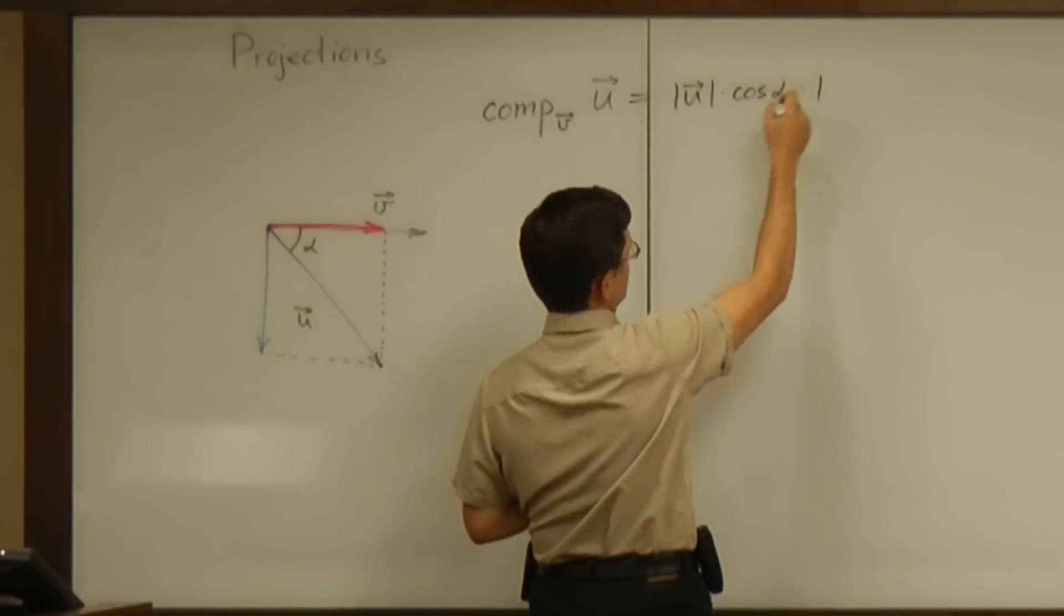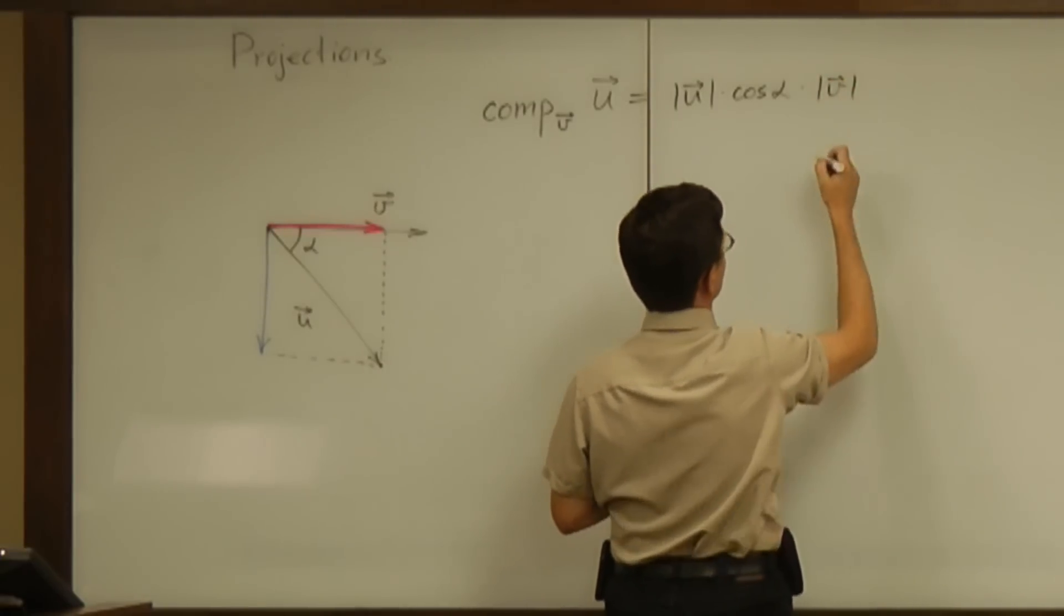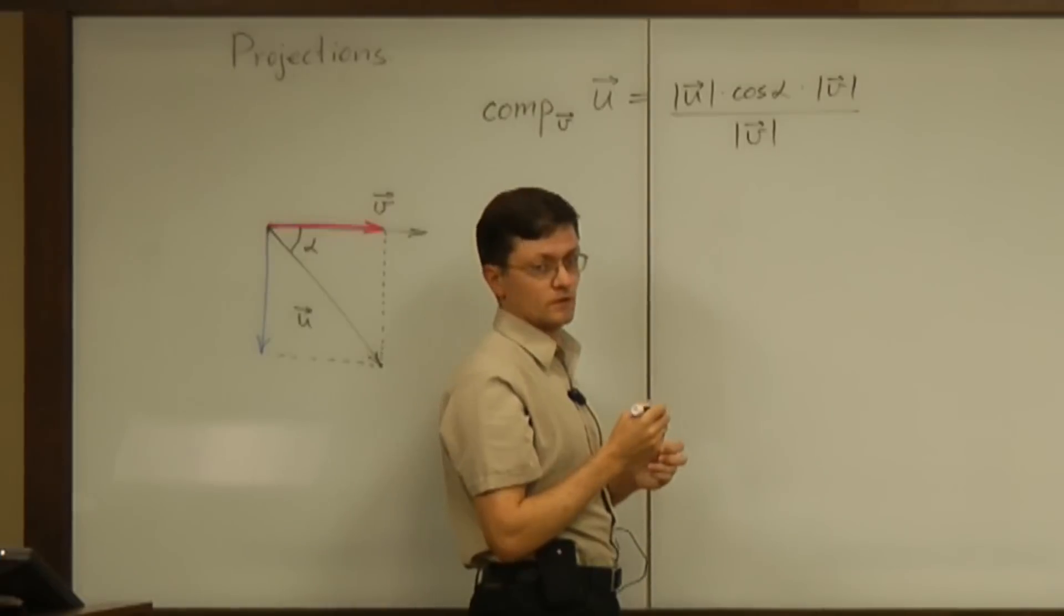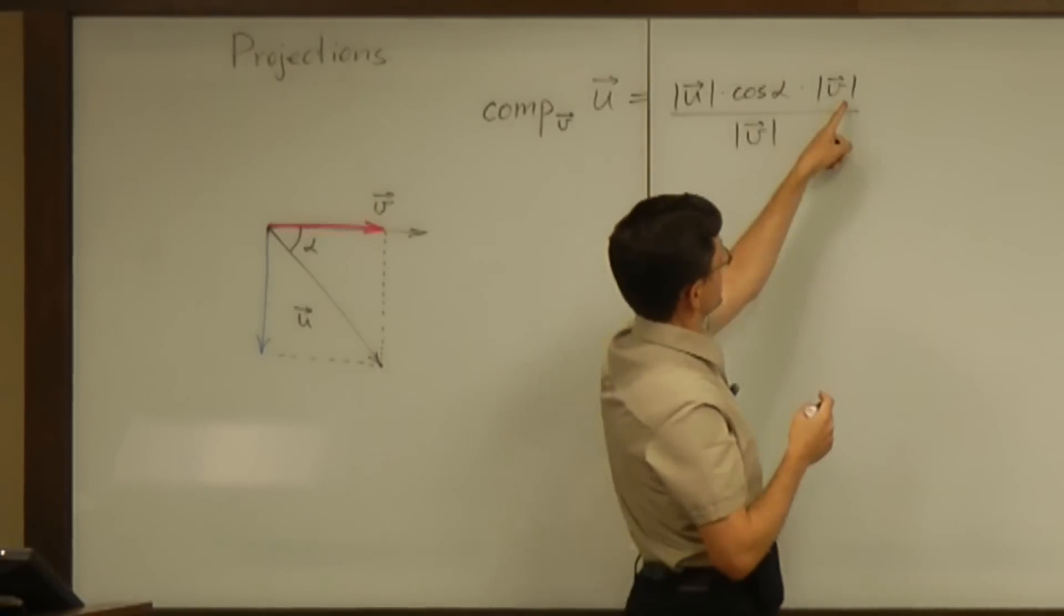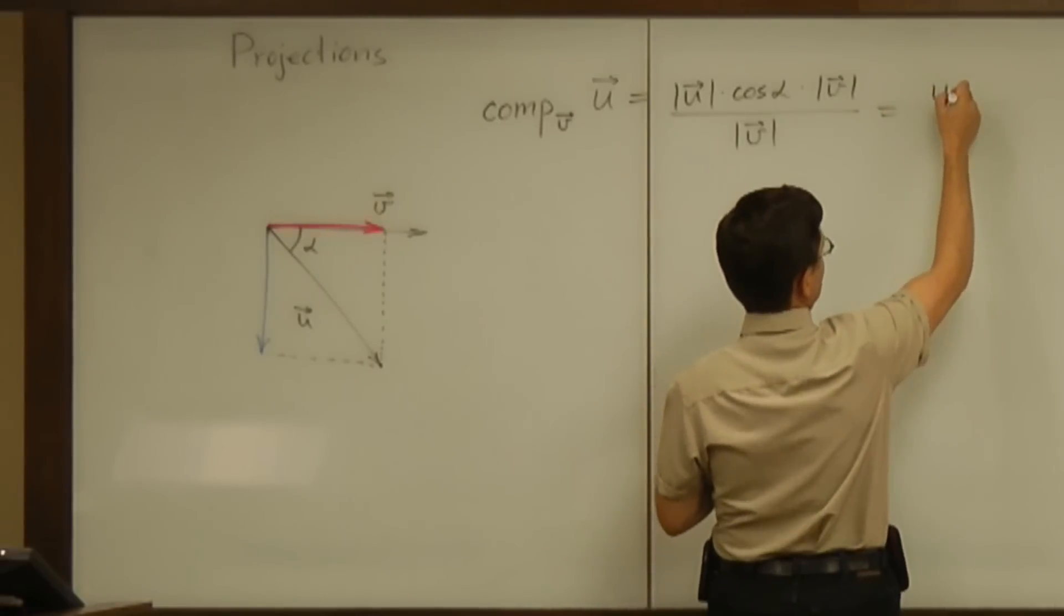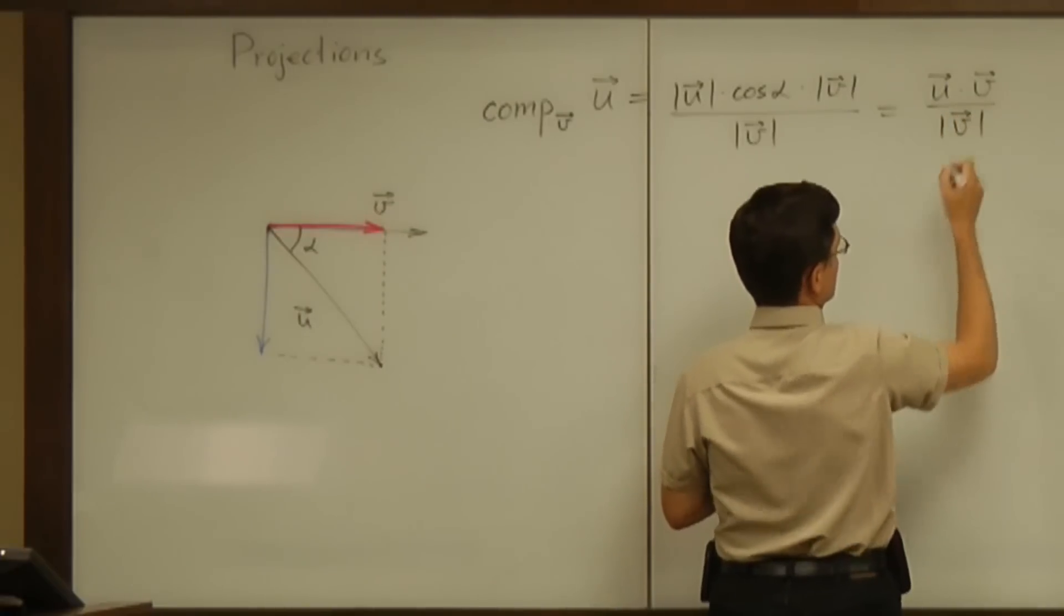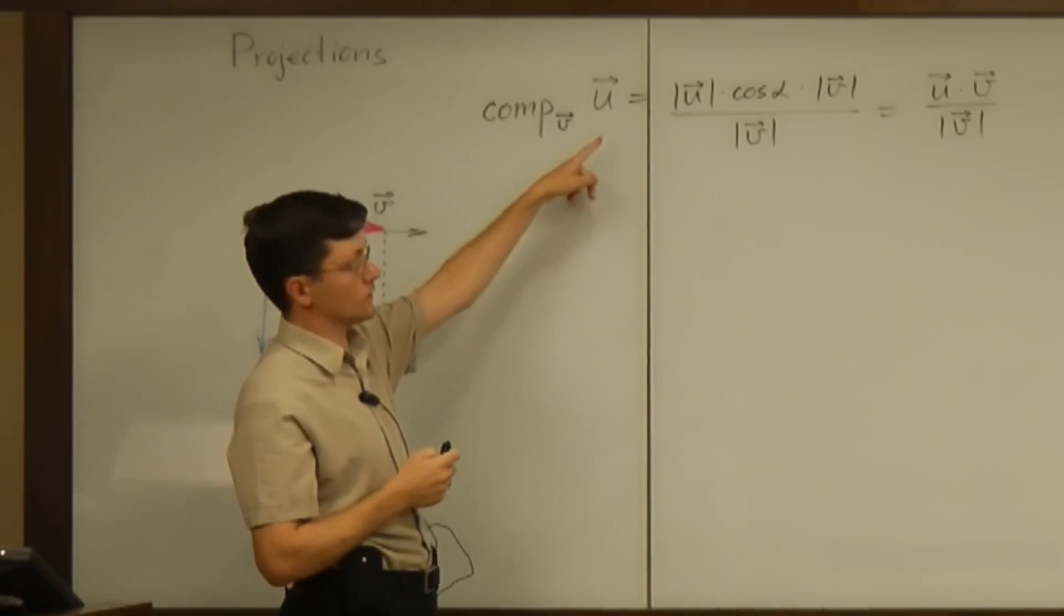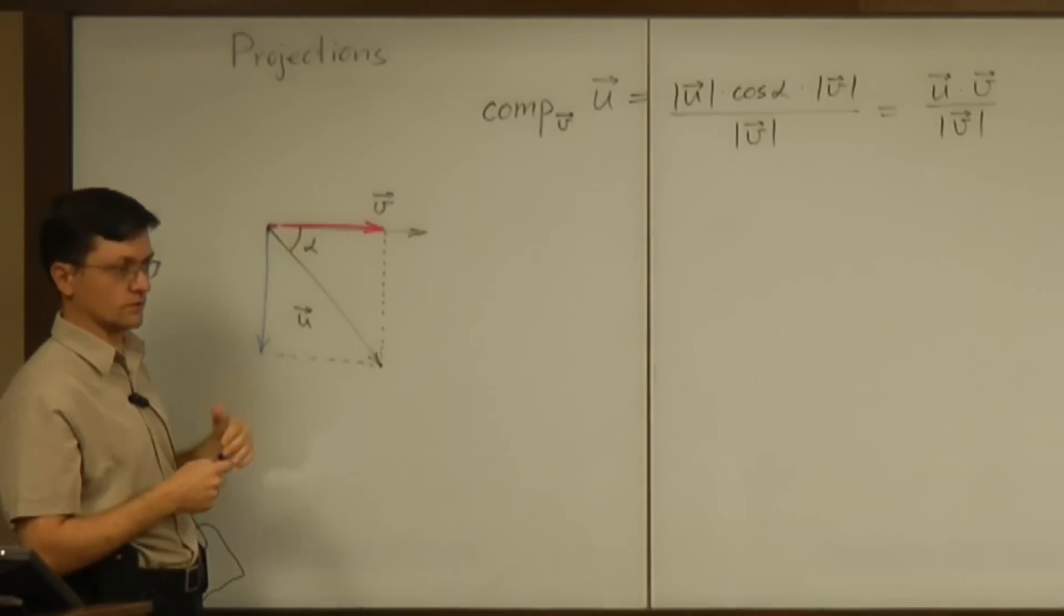So the idea is to compute that quantity using the dot product of u and v, which doesn't change the quantity itself, but the numerator now looks like the dot product. And actually it is the dot product. So it is the dot product of u and v divided by magnitude of v. And that's the simplest formula for computing the component of the force vector onto the given direction.